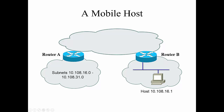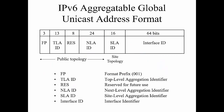So let's talk about IPv6 for a minute and the global unicast addressing format. Here we have a simple unicast address format with the format prefix, our TLA ID — top-level aggregate identifier — reserved bits, our NLA ID — next-level aggregation identifier — our SLA ID — site-level aggregator identifier — then our interface ID. This is a simplified unicast address format.